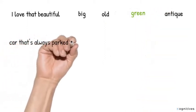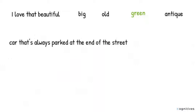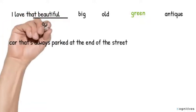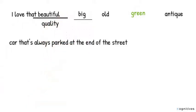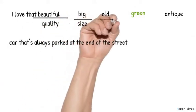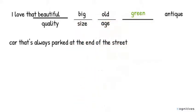Number two example: I love that beautiful big old green antique car that's always parked at the end of the street. Now notice the adjectives are well-ordered. Beautiful is quality. Big is the size. Old is age. Green is color. Antique is proper adjective.